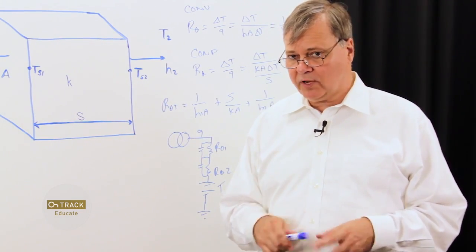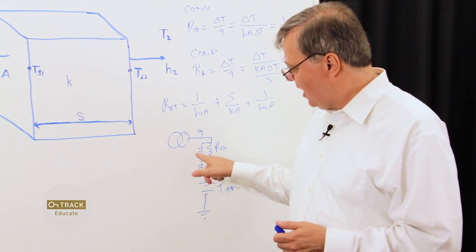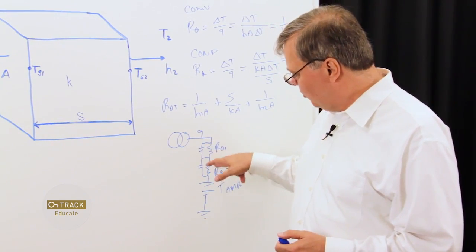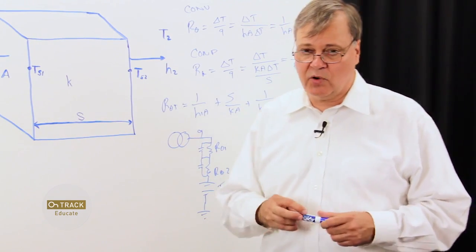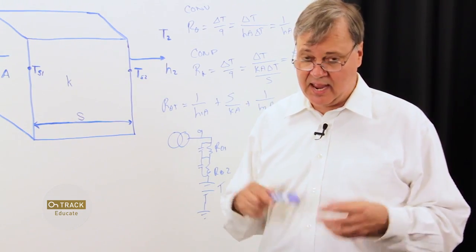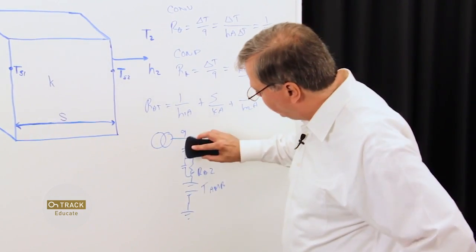We generally do not consider this when we're looking at the thermal management of components on a printed circuit board. However, if you're ever working with high-pulsed power, high-energy systems, you do have to consider this because the temperature through this R theta is going to go up with an E to the minus T over tau characteristic. However, for our purposes, we're going to ignore this for now.